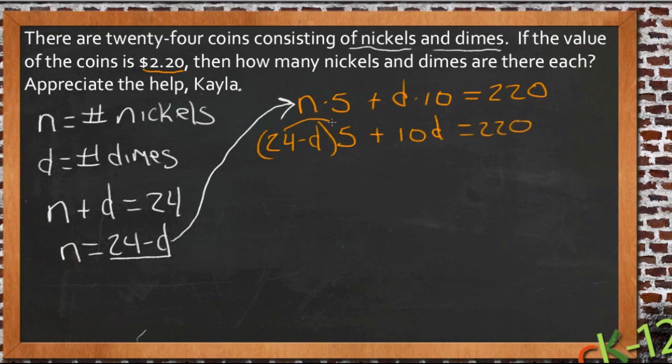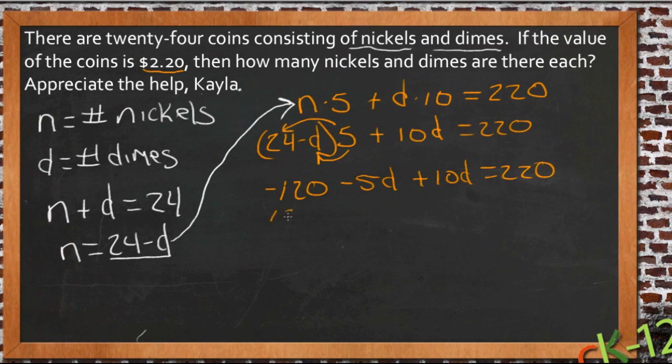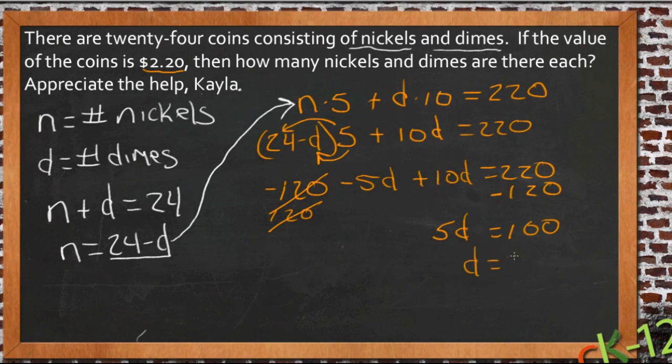We distribute that 5, so we have 5 times 24 and 5 times negative d. So we have 120 minus 5d plus 10d equals 220. So we can subtract 120 from both sides, goes away here, minus 120 leaves us 100 on this side. And negative 5d plus 10d leaves 5d. So if 5d is 100, divide both sides by 5 and we get d equals 20.